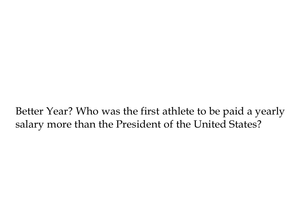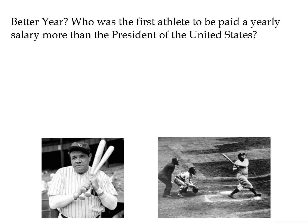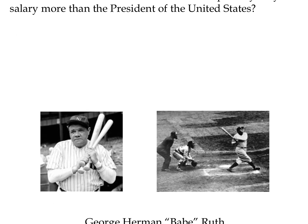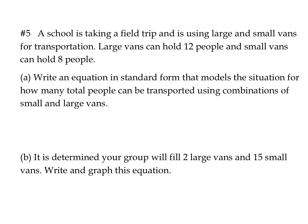Let's take a break from linear equations and talk about who the first athlete was to be paid a yearly salary more than the President of the United States. Nowadays many athletes earn more than the President, but this wasn't always the case. The answer is George Herman — otherwise known as Babe Ruth — who in 1932 had a salary of $80,000, while President Herbert Hoover's salary was $75,000. When asked about it, Babe Ruth famously said, 'I had a better year than the President did.'